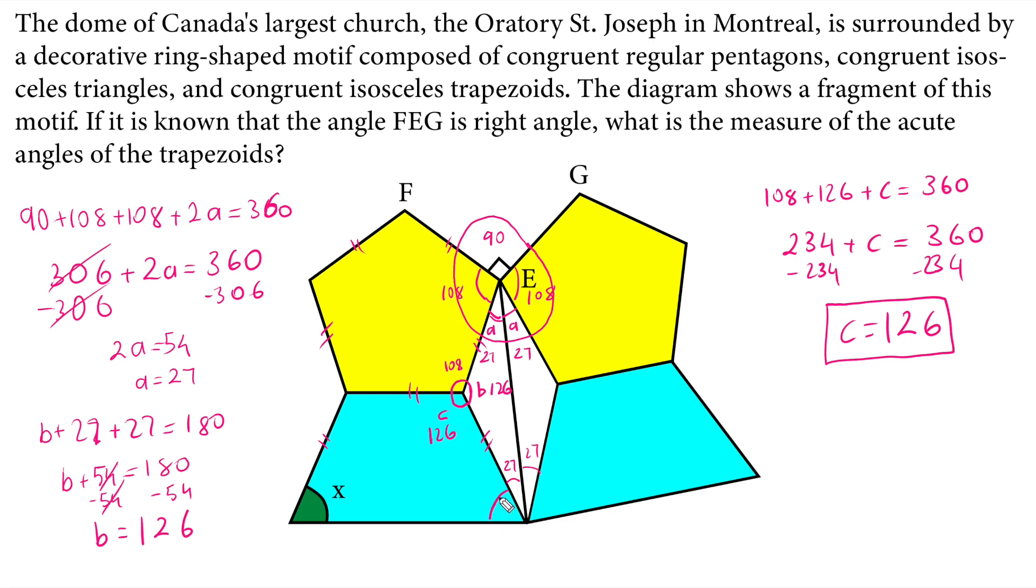So we know that the adjacent angles in a trapezoid are supplementary, they complete each other to 180 degrees. And this is also X, this is also X. So X plus 126 must equal 180. We subtract 126 from both sides. And therefore X equals 54 degrees as the solution to this question.